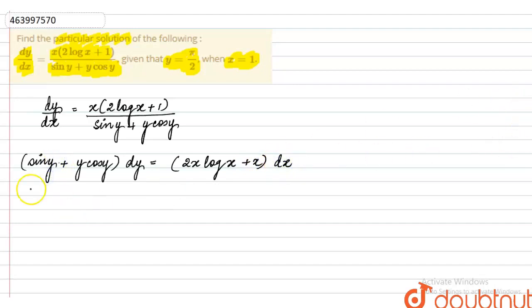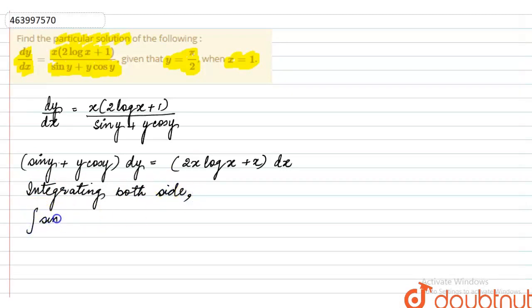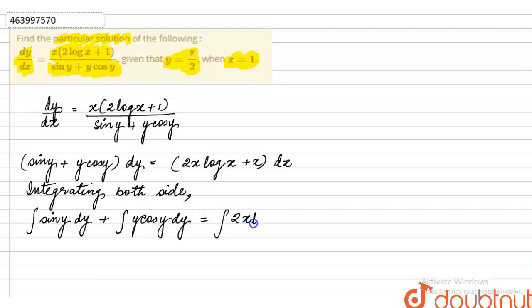Now we will integrate both sides. Integrating both sides: integration of sin y dy + integration of y cos y dy = integration of 2x log x dx + integration of x dx.